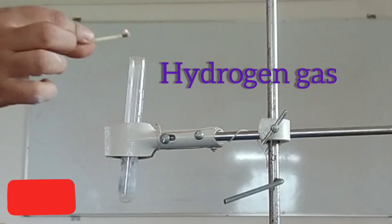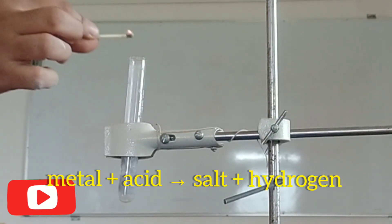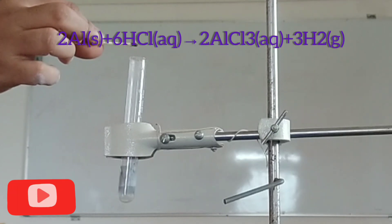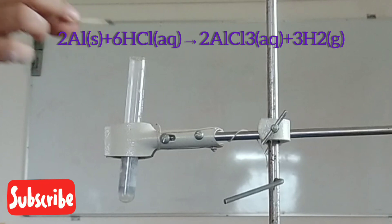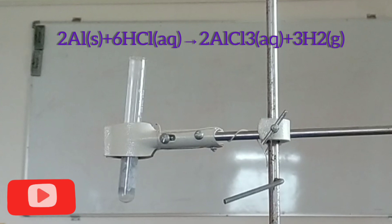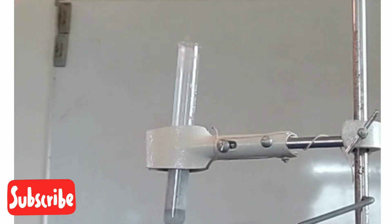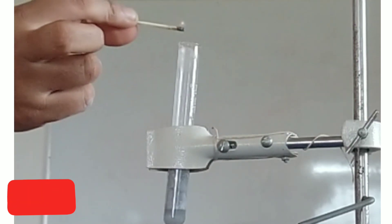When metal reacts with an acid, metal salt and hydrogen gas is produced. So in this case, we have taken aluminium and hydrochloric acid. Aluminium reacts with HCl hydrochloric acid to give aluminium chloride and hydrogen gas is liberated. This hydrogen gas burns with a pop sound.